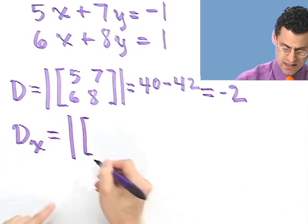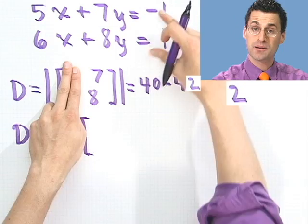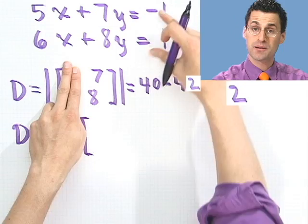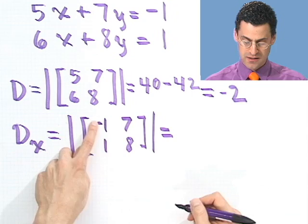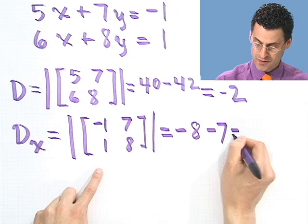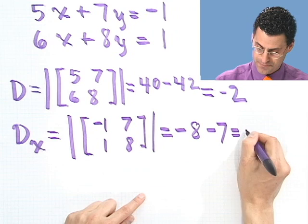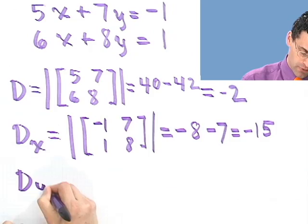Now let's compute D sub x. How do I compute D sub x? I just take this matrix, but get rid of the x column in exchange for putting these numbers in. So I put in minus 1, 1 in this column, but I keep the other column the same. Now I compute that determinant. Well, that's minus 1 times 8, so that's just minus 8. Minus, and then 7 times 1. So what's that? Well, minus 8 minus 7 is actually going to be minus 15.